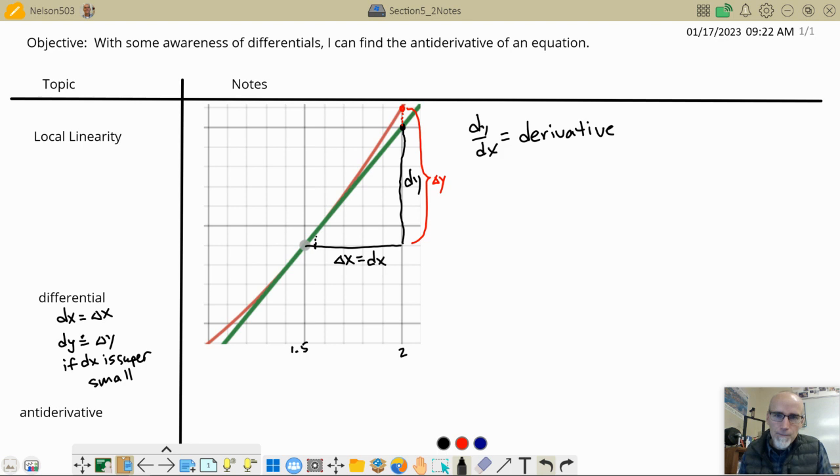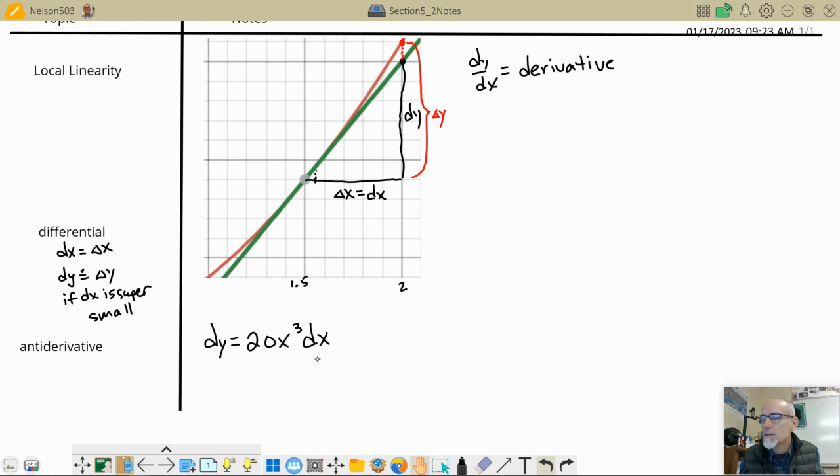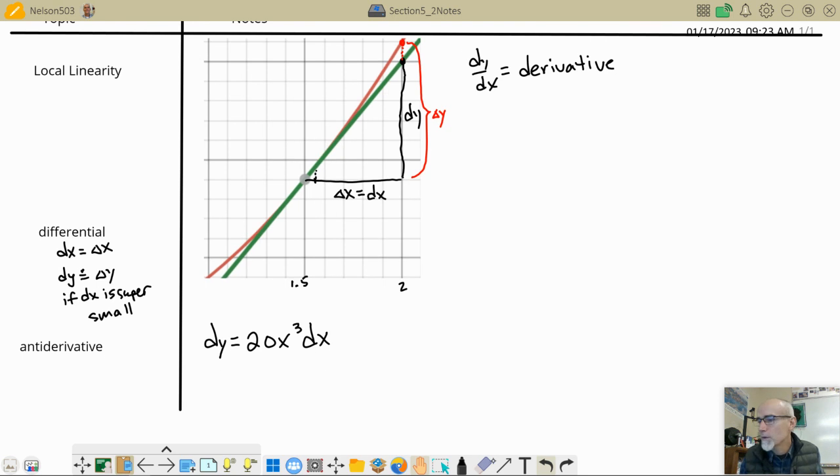So what we're going to see on tonight's homework, I'm going to put down the first problem we're going to do right here is you're going to see something like this. You're going to see dy is equal to 20X cubed DX. So what the heck is going on here? Well, if I move the DX back to the other side, like divide both sides by DX, we have dy/dx is equal to 20X cubed. So what we're saying is this 20X cubed is the derivative of some function.